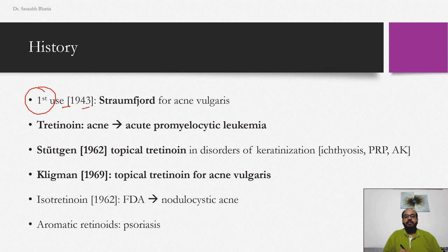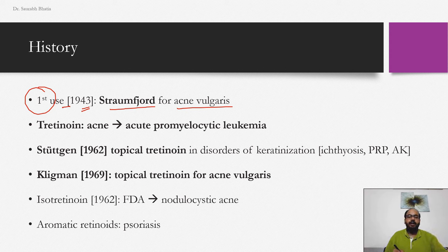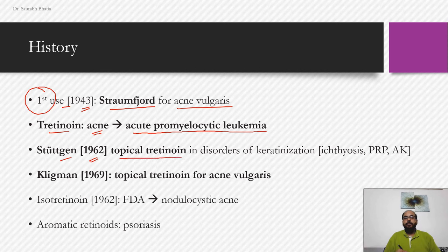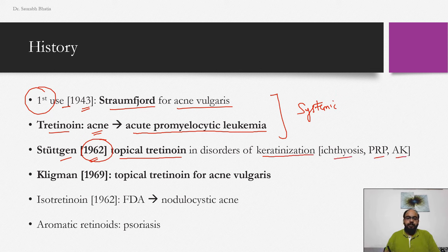The first use of retinoids was in 1943 by Strandberg for acne vulgaris. Retinoids were also found to be beneficial in acute promyelocytic leukemia, and even today retinoids are part of anti-leukemic regimens for promyelocytic leukemia. In 1962, Stuttgen first started using topical retinoids — this was the first time topical therapy was introduced, as initially retinoids were only systemic agents. He used topical retinoid in keratinization disorders like ichthyosis, PRP, and actinic keratosis.